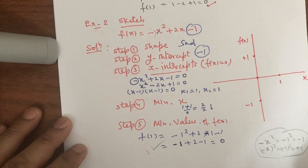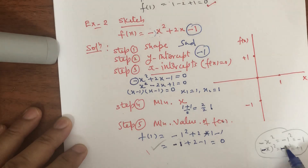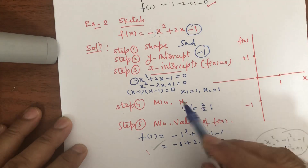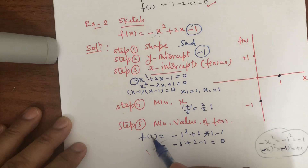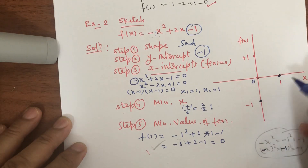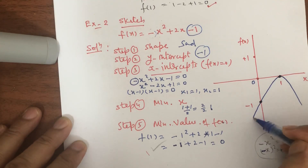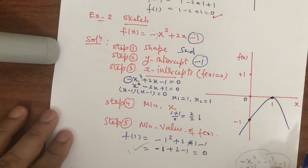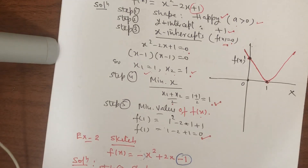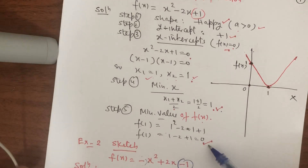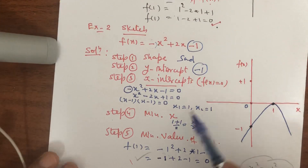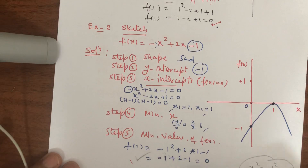If the value of x is minus, we put it like this. Now: y-intercept is -1, x₁ = 1, x₂ = 1, minimum x = 1, and minimum f(x) = 0. With the same information as Example 1, here in Example 1 the shape is happy, and in Example 2 the shape is sad — same numerical information, different shape.